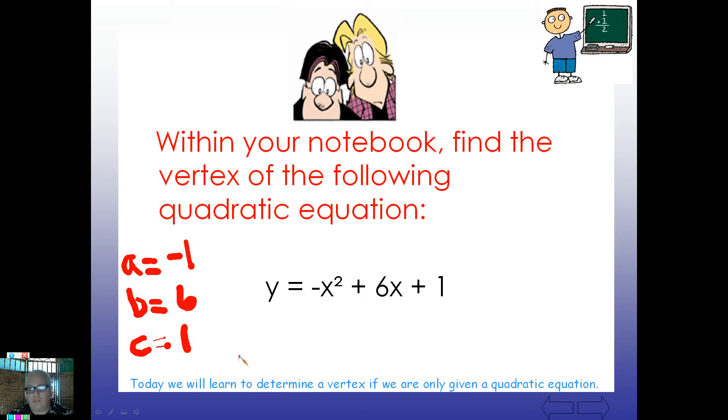Now, what was our next step? Our next step then was to use negative B, or the opposite of B, over 2A. So, go ahead and do that and see what you come up with. All right. If I did this, I'm looking at the opposite of B. That's going to be negative 6 over 2 times negative 1. Is that negative 2? So, did you get an axis of symmetry of 3, negative 6 divided by negative 2? So, hopefully we got a 3 there.